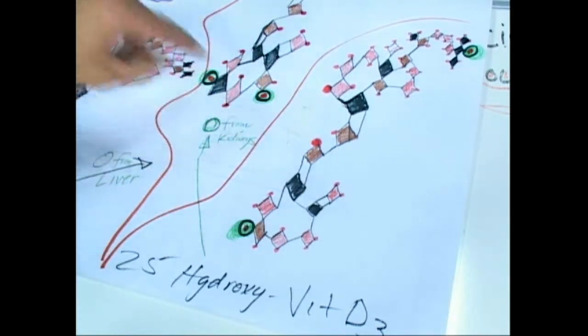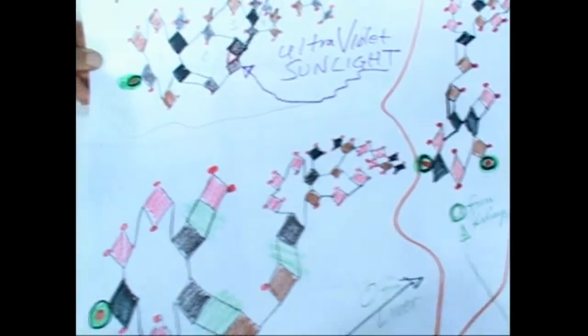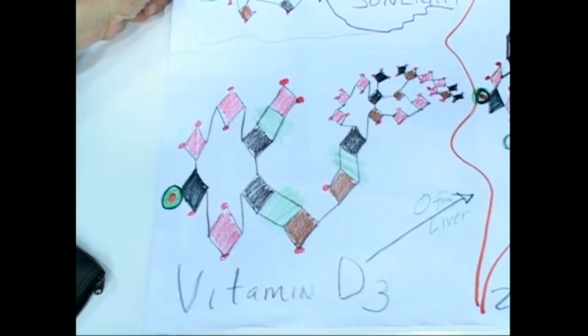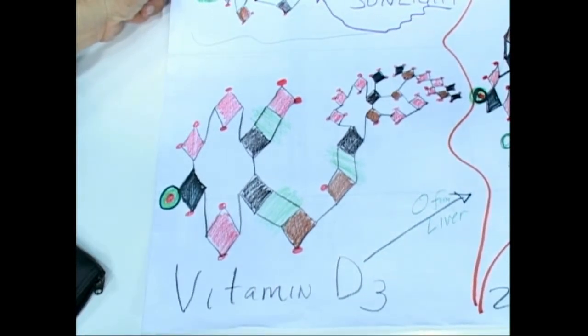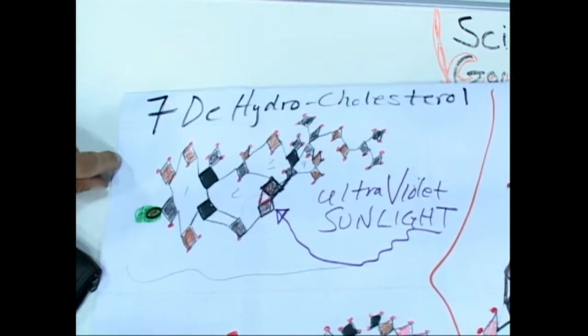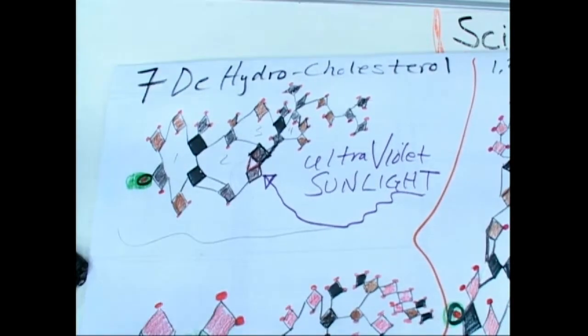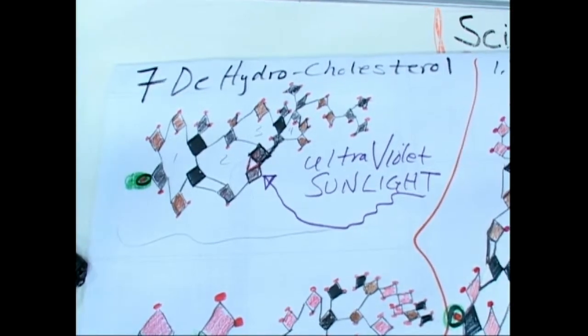So now with the color coding, you can go through and compare which carbons change their personalities. The D3 comes from first the 7-dehydrocholesterol.